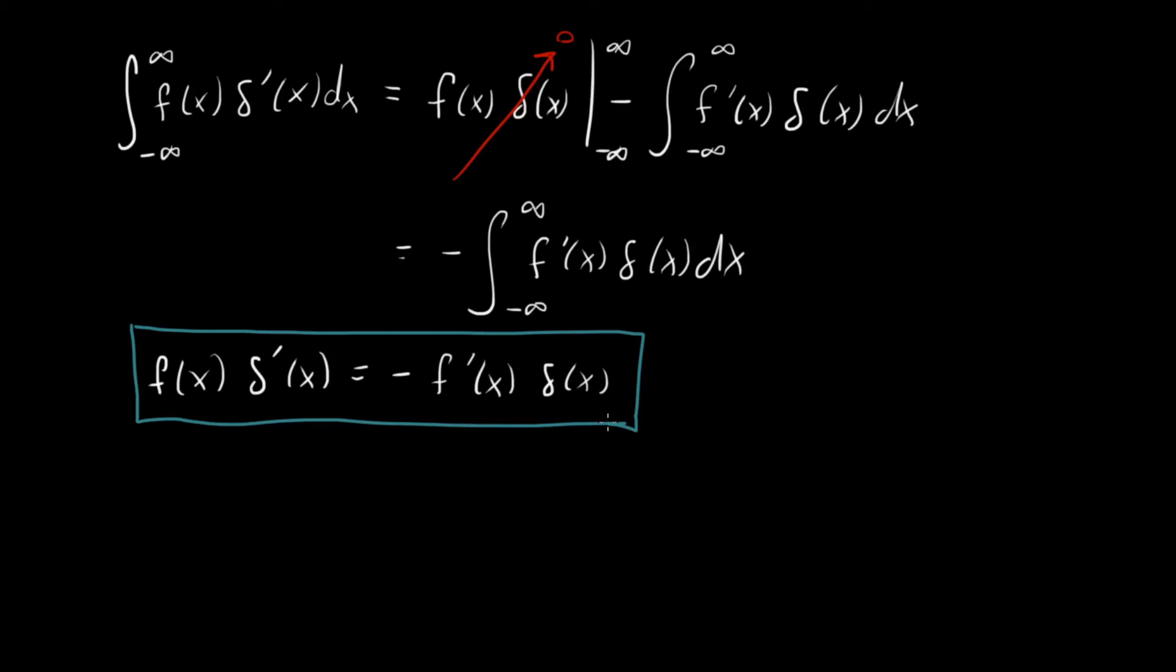So this is great. We now know how to handle a single derivative on our delta function, but what if we have multiple? What if we have two or three or four delta primes on our delta? Well, let's do it for the case when there are two derivatives on delta, and we'll kind of see how the pattern goes from there. So let's say we wanted to do this integral, f of x delta prime prime of x dx.